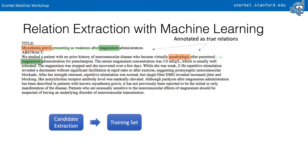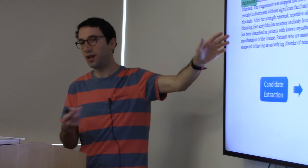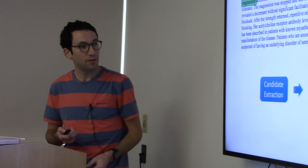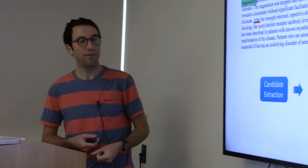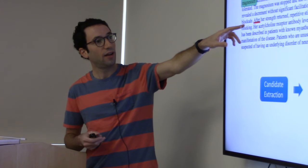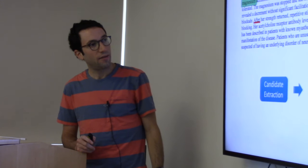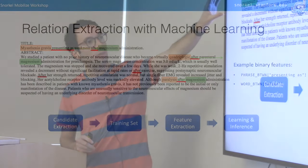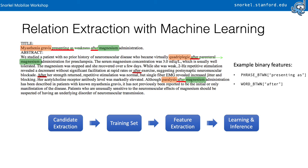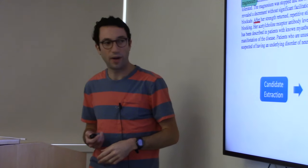In a standard machine learning approach, you'd have experts label which of those candidates are true examples, then extract features — aspects of the data you think the model should pay attention to, like certain types of words or specific verbs from a list. Finally, you train a model to learn weights of those features so it can pick out new examples. This is sort of the standard machine learning-based relation extraction pipeline from about five years ago and beyond.